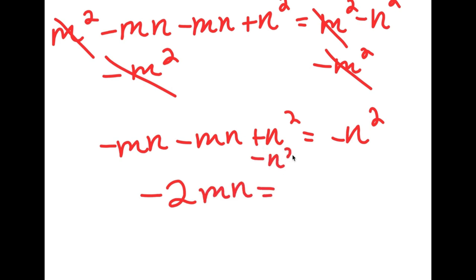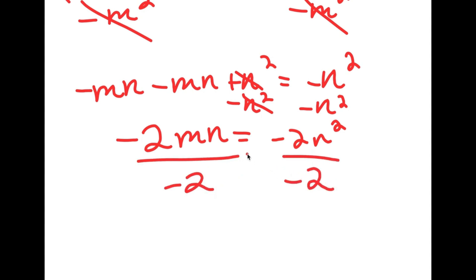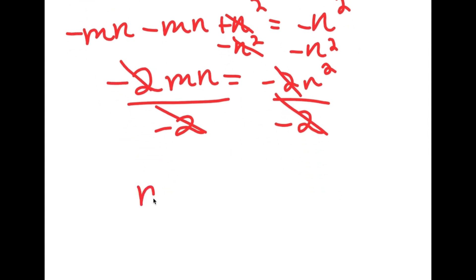If I subtract n squared on both sides, these two cancel out and I get negative 2mn equals negative 2n squared. From here, I can divide both sides by negative 2, so then these cancel out, and I'm simply left with mn is equal to n squared.